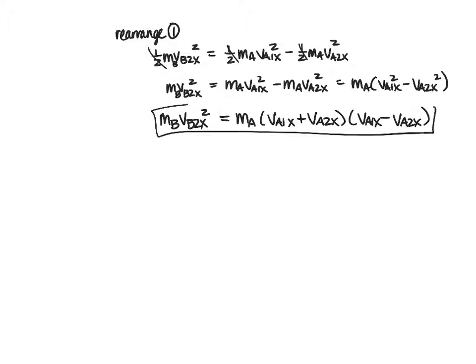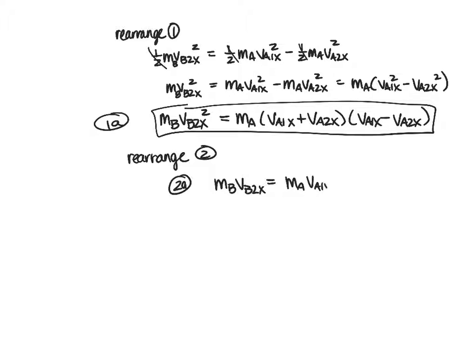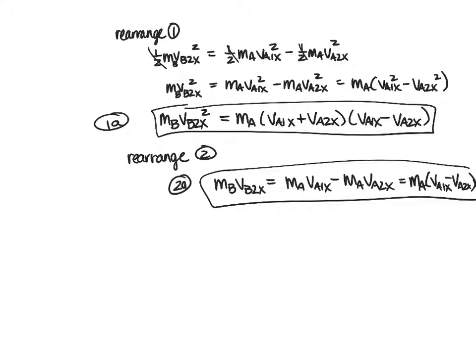And so this one, I'm going to call one a, and then I'm going to rearrange the conservation of momentum to give me 2A, which would be MBVB2X is equal to MAVA1X minus MAVA2X. And I'm going to factor out the VA. Now if I do that, so I have this equation, I'm going to take equation 1A and divide it by equation 2A.